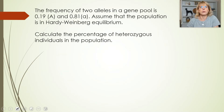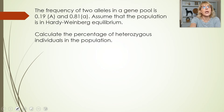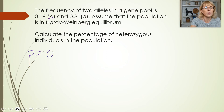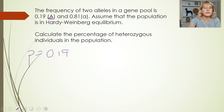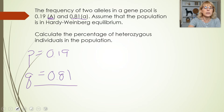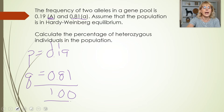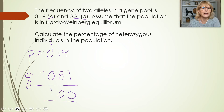Let's do a sample problem. The frequency of two alleles in the gene pool: the dominant allele A has p equal to 0.19, and the recessive allele a has q equal to 0.81. Notice that 0.19 plus 0.81 adds up to one, because if we only have two alleles, p plus q always equals one. The question asks: what is the percentage of heterozygous individuals in the population?